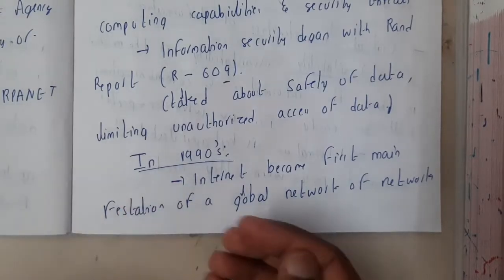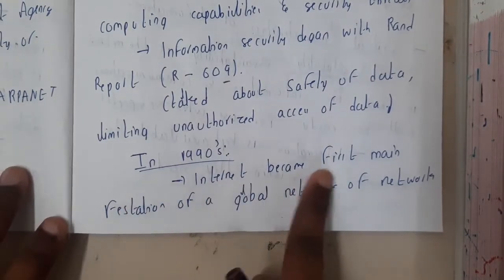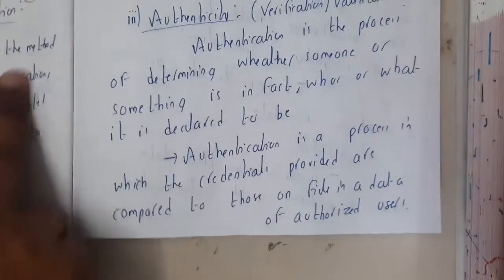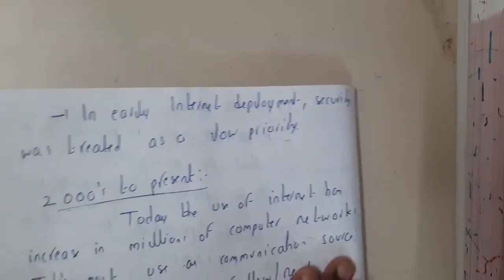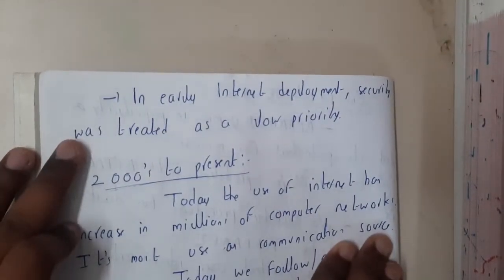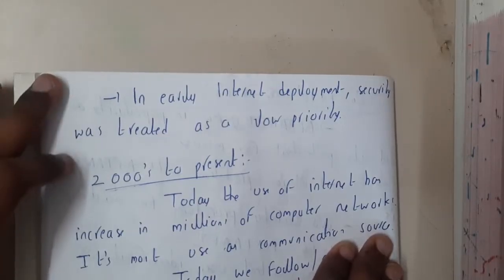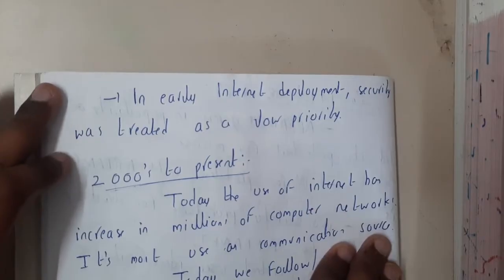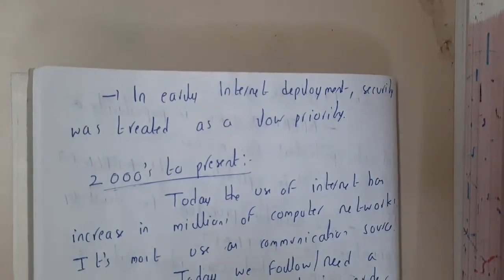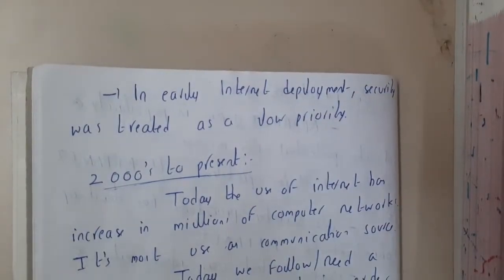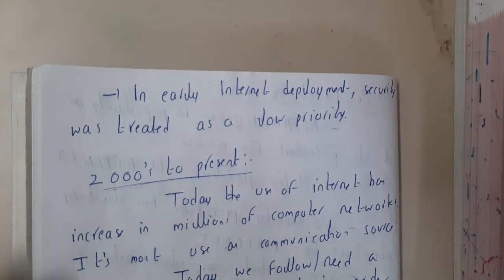In the 1990s the internet became the first major global network. In early internet deployment, security was treated as a low priority. Initially it did not have that much security, but currently we have almost all types of security — biometric and all those things. You can unlock a phone with face ID, patterns, codes, or fingerprints.